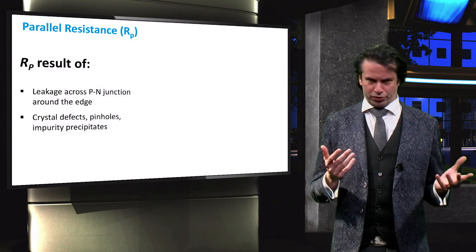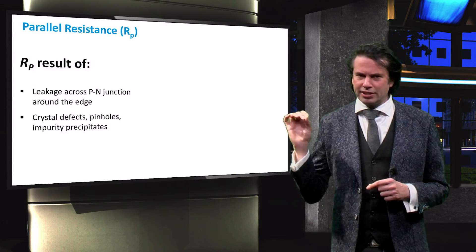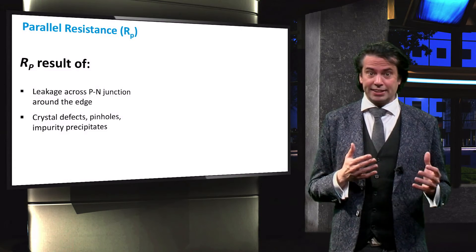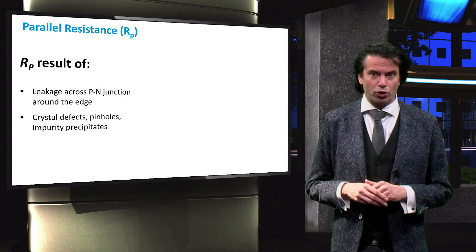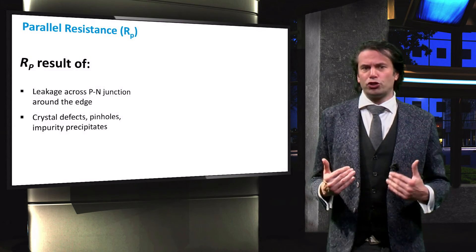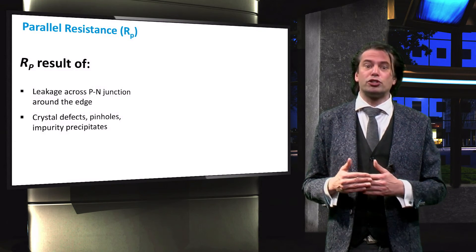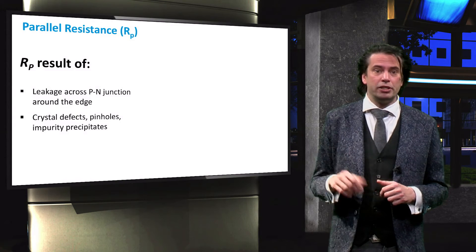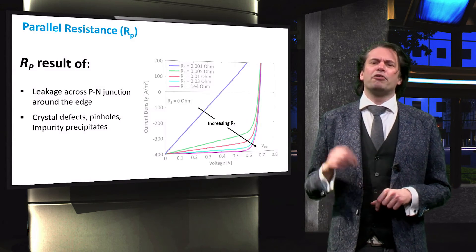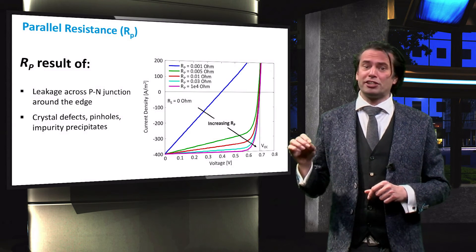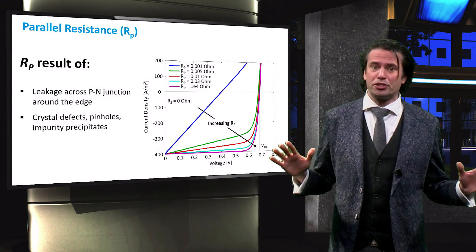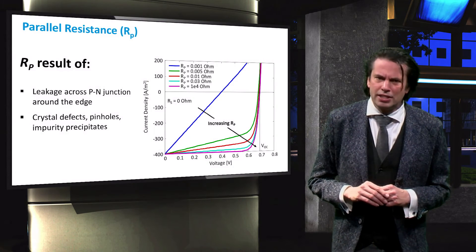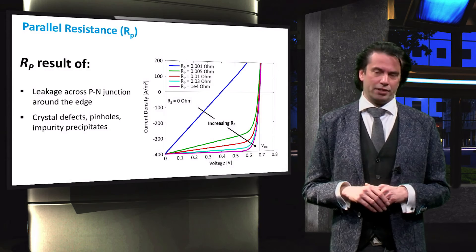Next, we look at the shunt resistance. This resistance is parallel to our load, so we actually want it to be as large as possible, otherwise it acts as a sink for the current that will reduce power to the load. A reduced shunt resistance is caused by leakages across the p-n junctions around the edges of the solar cell, or defects, pinholes, and impurity precipitates in the semiconductor material. You can see here that if we have a shunt resistance of 0, our solar cell hardly produces any power at all. As we increase our shunt resistance by orders of magnitude, we can see the shape of the curve return to that of an ideal diode.